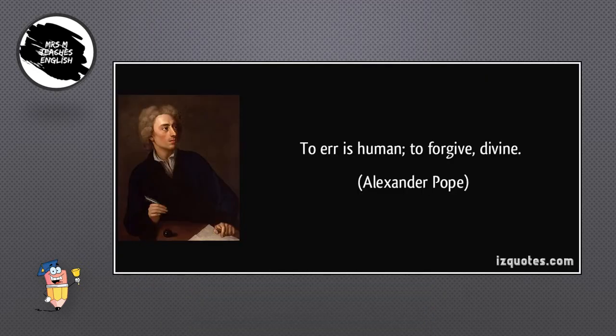Let's look at some examples from the world of literature. Here's one from the writings of the English poet Alexander Pope: to err is human, to forgive divine. This means that as humans, we make mistakes, but the power to forgive those mistakes is divine, from God.